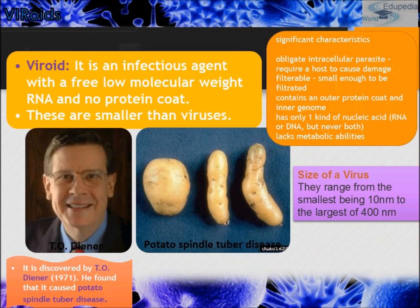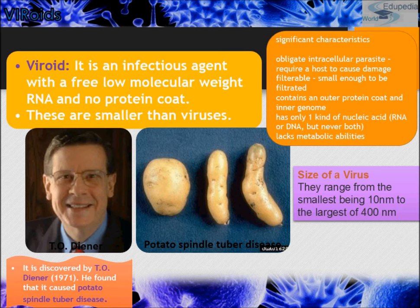A viroid is an infectious agent with a free low-molecular-weight RNA and no protein coat — they are smaller than viruses, ranging from 10 nm to 400 nm. They were discovered by Diener, who found they caused potato spindle tuber disease. Significant characteristics: viroids are obligate intracellular parasites requiring a host; they are filterable; they contain only RNA or DNA but never both; and they lack metabolic abilities.